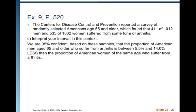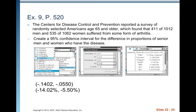Interpret your interval in this context. We are 95% confident, based on these samples, that the proportion of American men aged 65 and older who suffer from arthritis is between 5.5% and 14.0% less than the proportion of American women at the same age who suffer from arthritis. Since the entire interval is negative, that's why we know it's less than. If there were positive values, we'd say greater than.